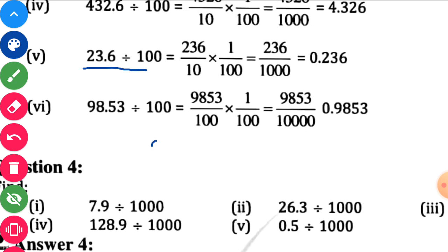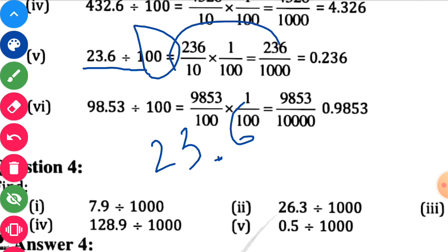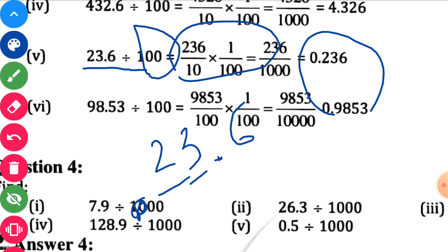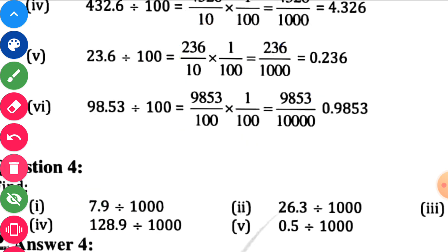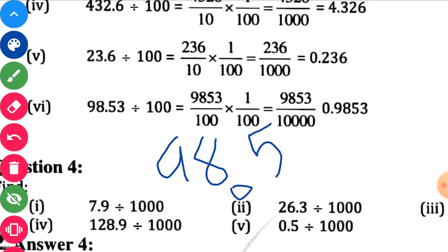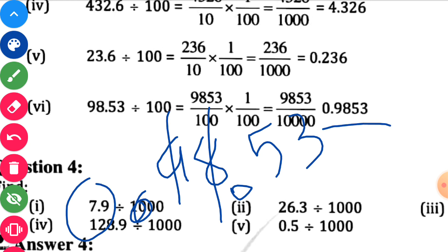Next, 23.6 divided by 100. Count two digits: 1, 2 — put the decimal point here. So your answer will be 0.236. Next, 98.53 divided by 100. Count two digits: 1, 2 — and here decimal point. So your answer will be 0.9853. Question number 3 is over.